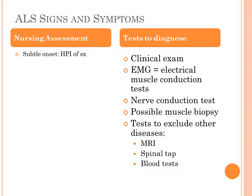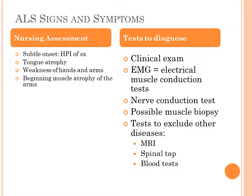For nursing assessment, what are we going to see at the bedside? Probably a pretty subtle onset. We'll have to do a good HPI — history of presenting illness. Symptoms may include some tongue atrophy, some trouble speaking or slurring of words, weakness of the hands and arms. It seems to start in the upper extremities, with beginning muscular atrophy of the arms. You may actually see that muscle mass change. If you remember during physical assessment, you studied fasciculation of the tongue, and here you might see fasciculations of the face.